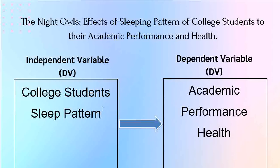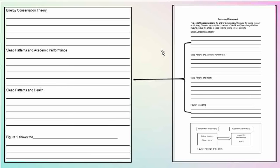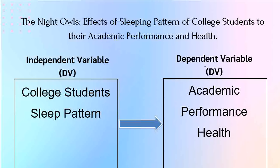Under that specific conceptual framework, maglalagay ka ngayon o ididiscuss mo ngayon yung mga concepts na nilagay mo doon sa conceptual framework mo. Remember, ang tawag natin dito ay mga conceptual framework — yung college students, academic performance, ito yung concepts o parts ng ating paradigm of the study. Ibig sabihin, hindi ka dapat tumigil dyan — you have to explain it. So sa baba ng brief discussion natin, sa overview ng ating conceptual framework, magsusulat tayo at i-explain natin yung mga concepts na pinaglalalagay natin dito sa ating paradigm.